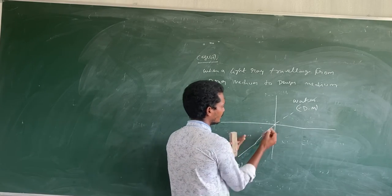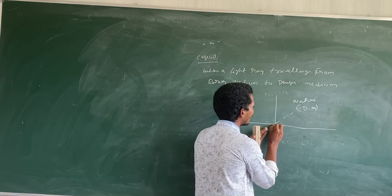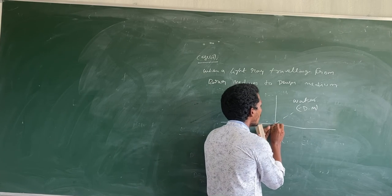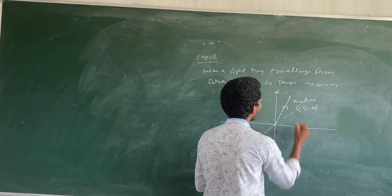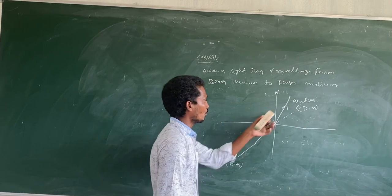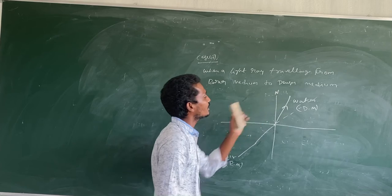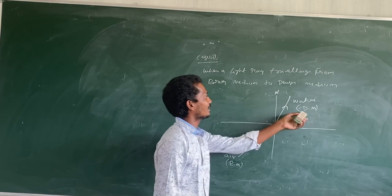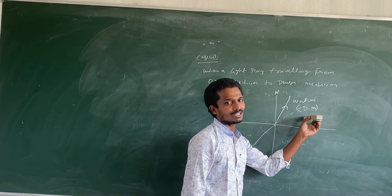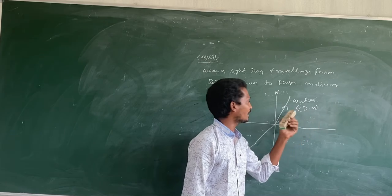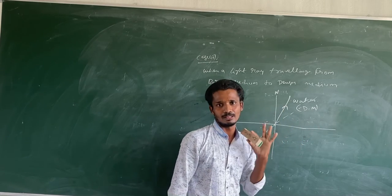Rarer medium to denser medium — what happens? The light ray bends towards the normal. Why? Here the density is high and the particle velocity is low. That's why the light ray bends towards the normal.